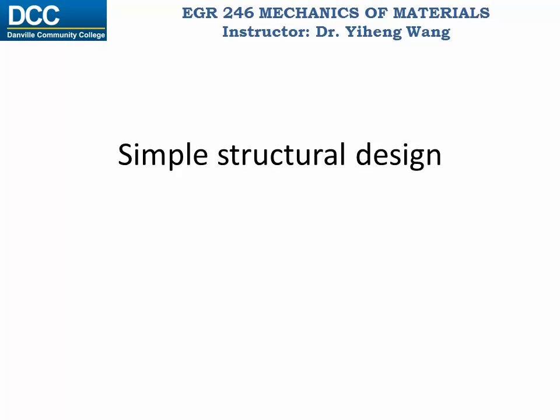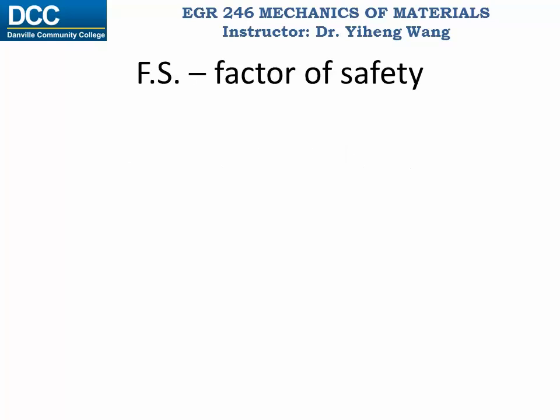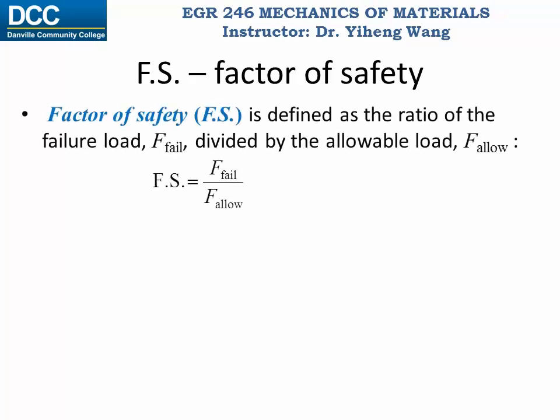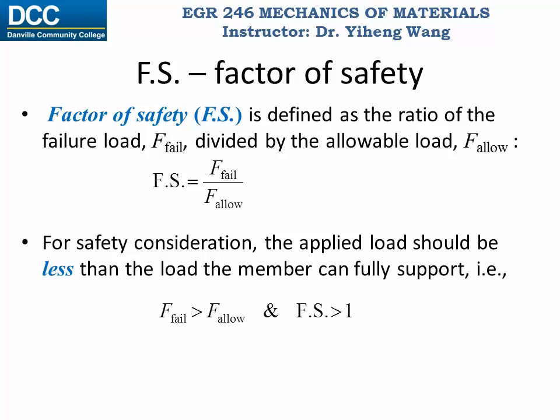This buffer zone in design is characterized by the factor of safety. In this class, factor of safety is specifically defined for a load-sustaining member to be the failure load divided by the allowable load. Failure load means that when subjected to this amount of load, the member will fail — it might bend, twist, crack, or break — any situation that makes the member unsafe. Therefore, the allowable load should be notably smaller than the failure load, and the factor of safety is always greater than one.